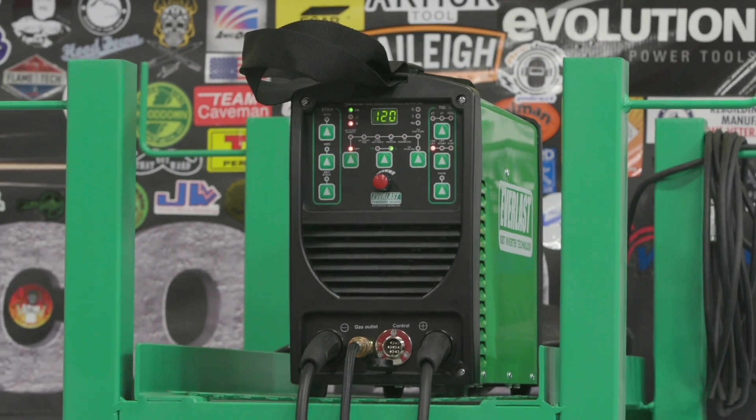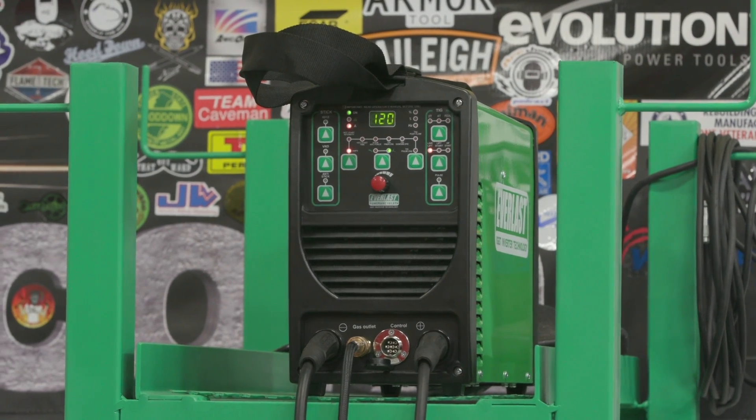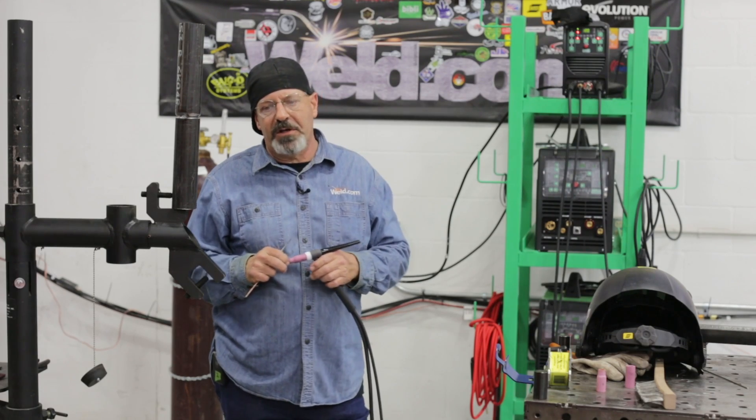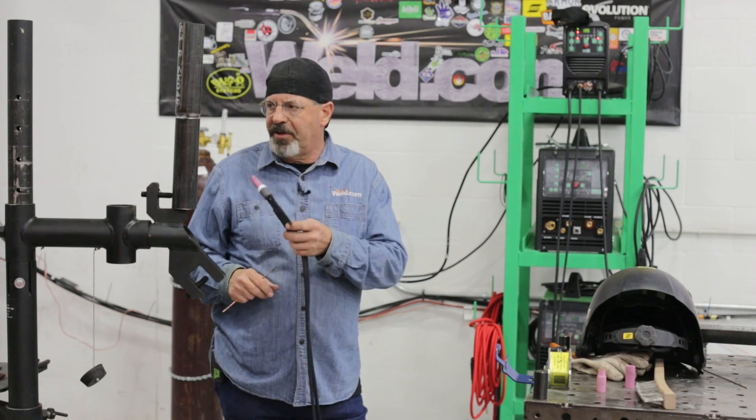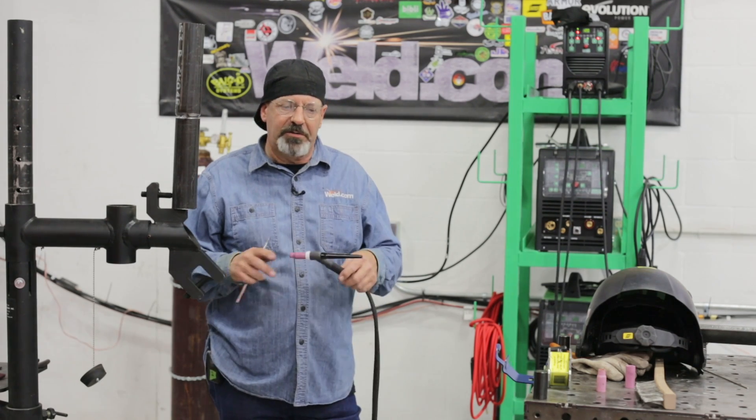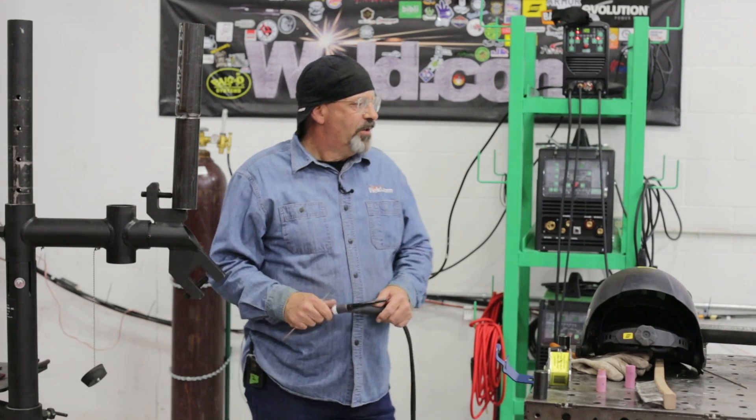I'm running off of an Everlast 161 STH and I'm using a feature called Live Arc. It's just like touch start. As soon as I touch the tungsten to the grounded material, gas and amperage come on. I don't have to use the valve. So, I'm going to transfer some leads over here. We'll commence our run.